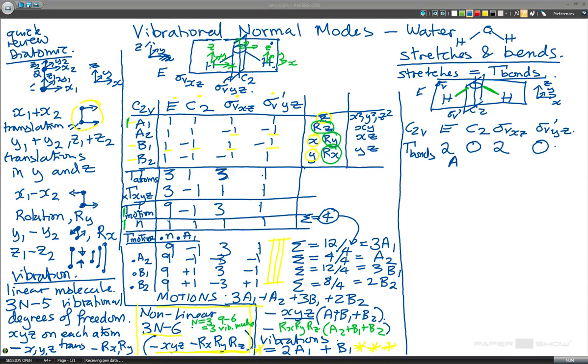I recommend that you have a go at doing this and pause the video, but I'm just going to write down the answer here. So the answer is A1. It's equivalent to A1 plus B1. And these are the stretches. So that must mean that the bending are equal to A1, because that's for vibrations minus for stretches.